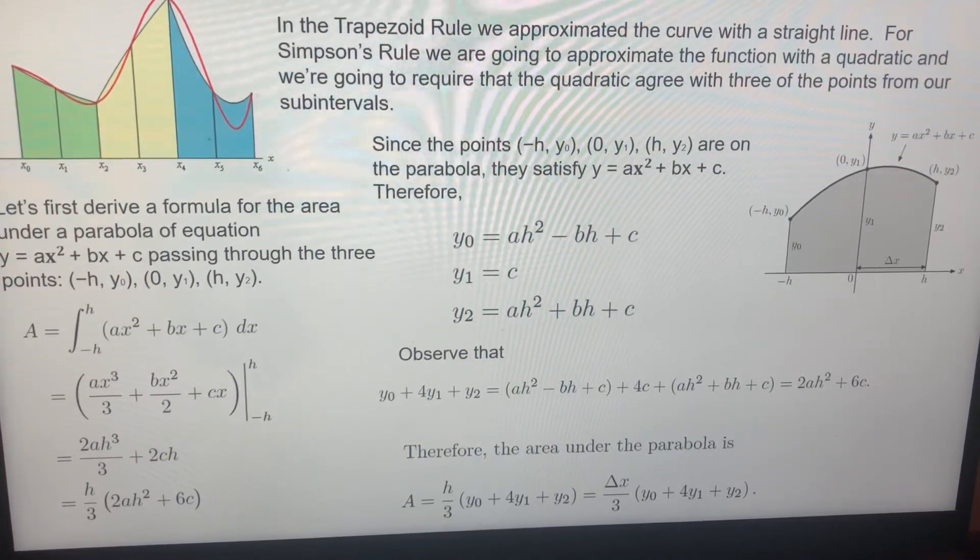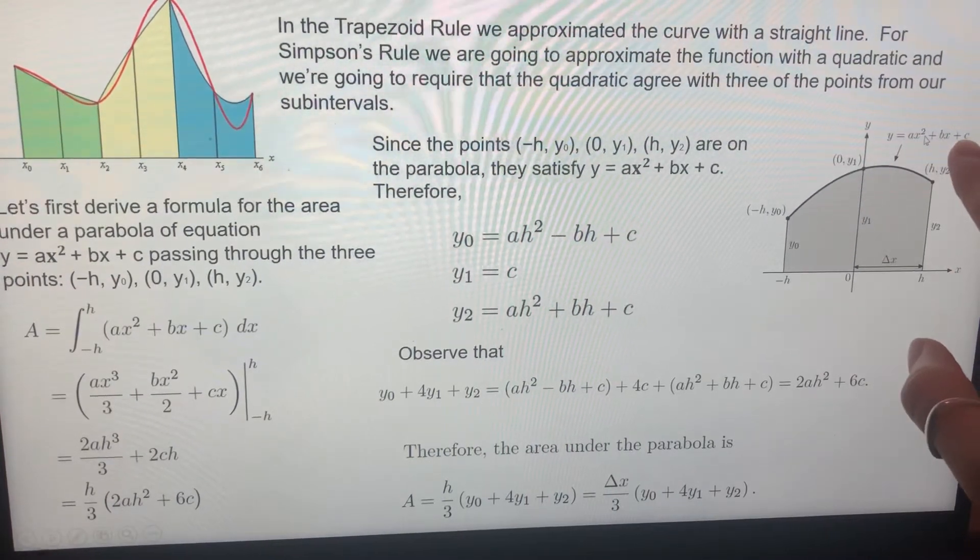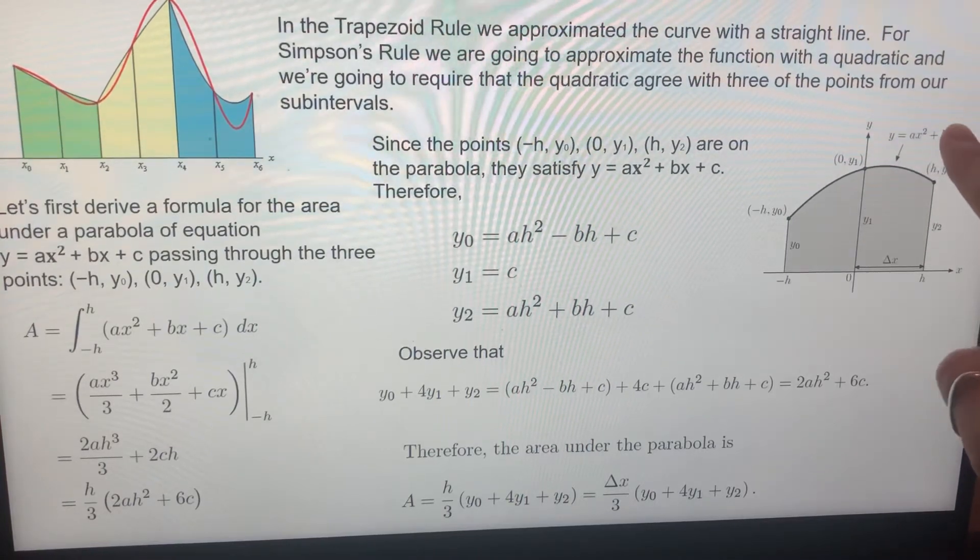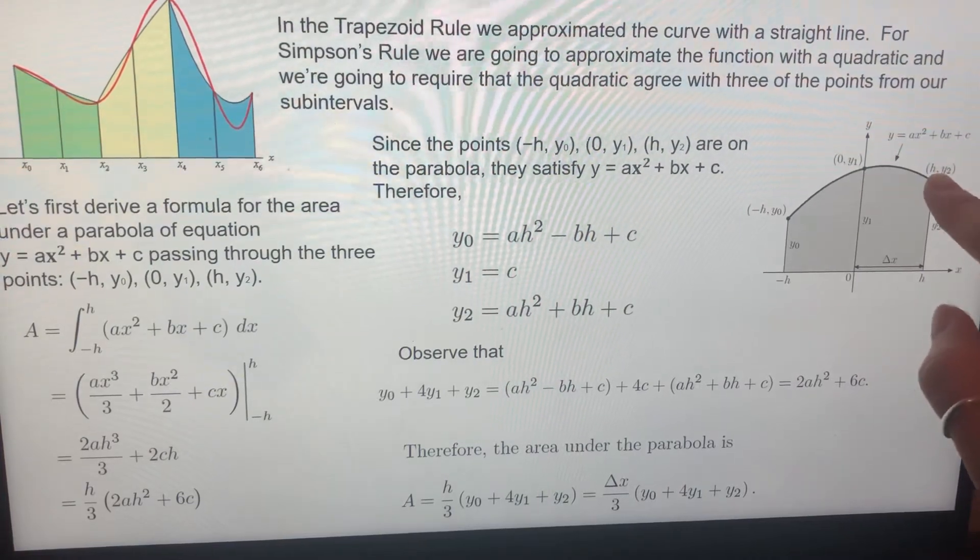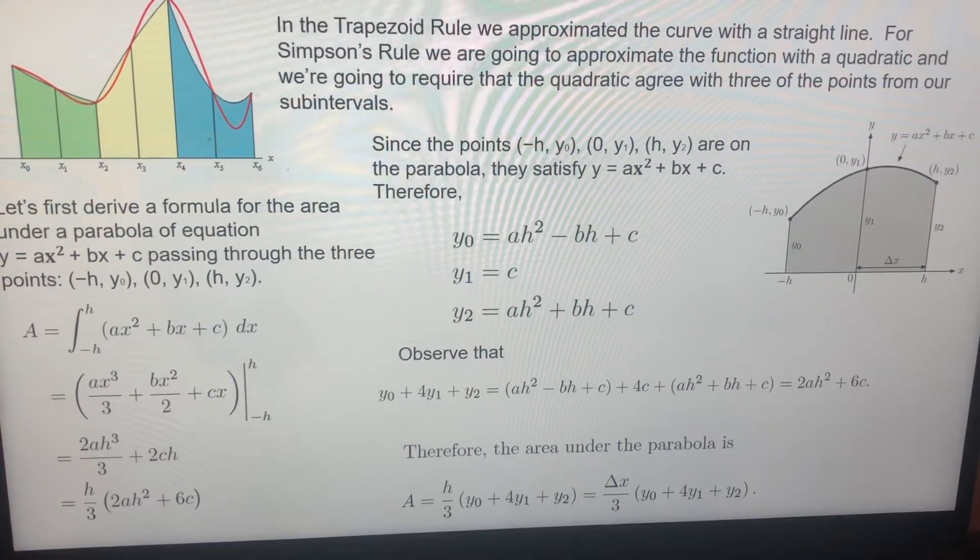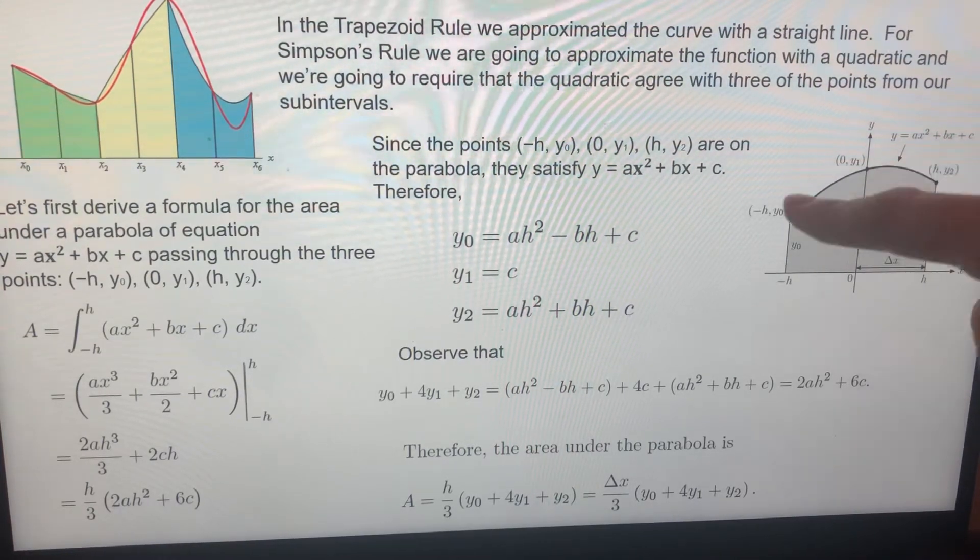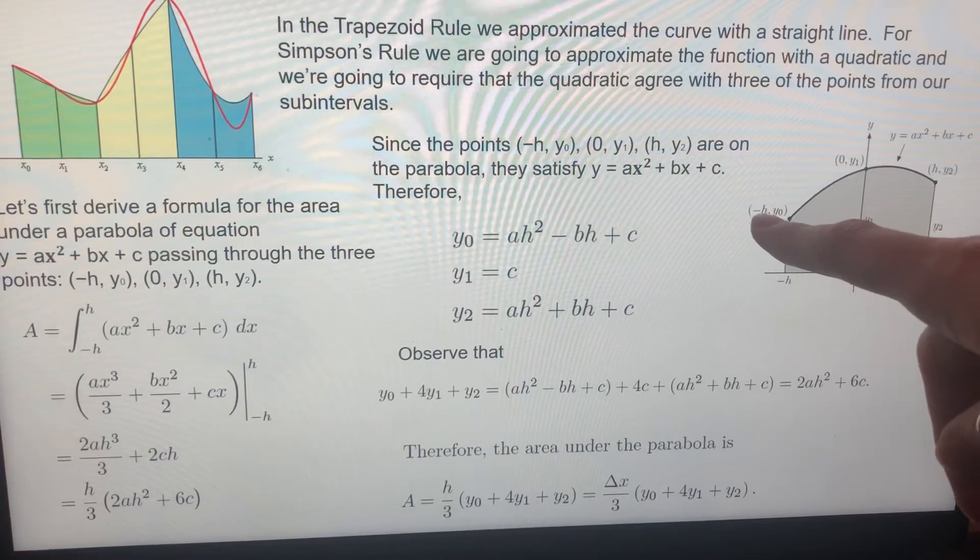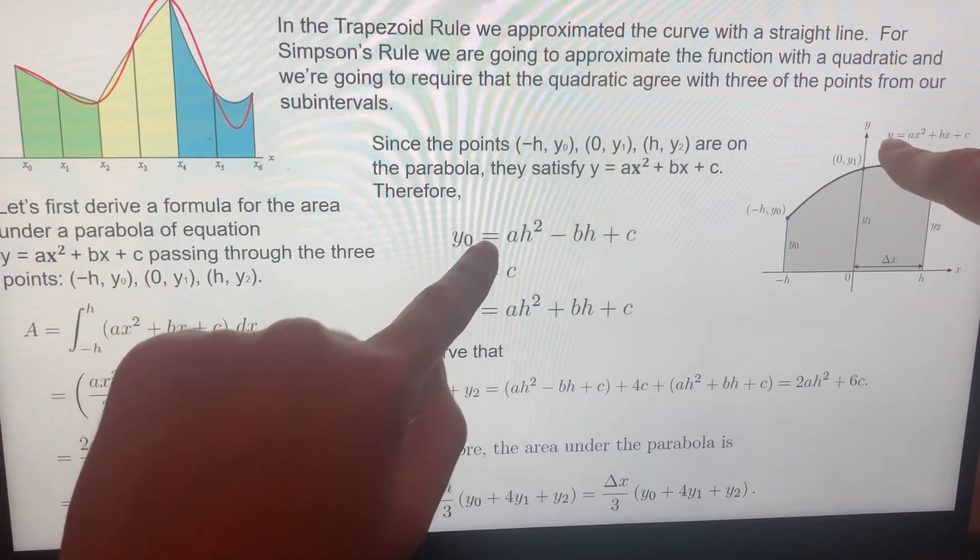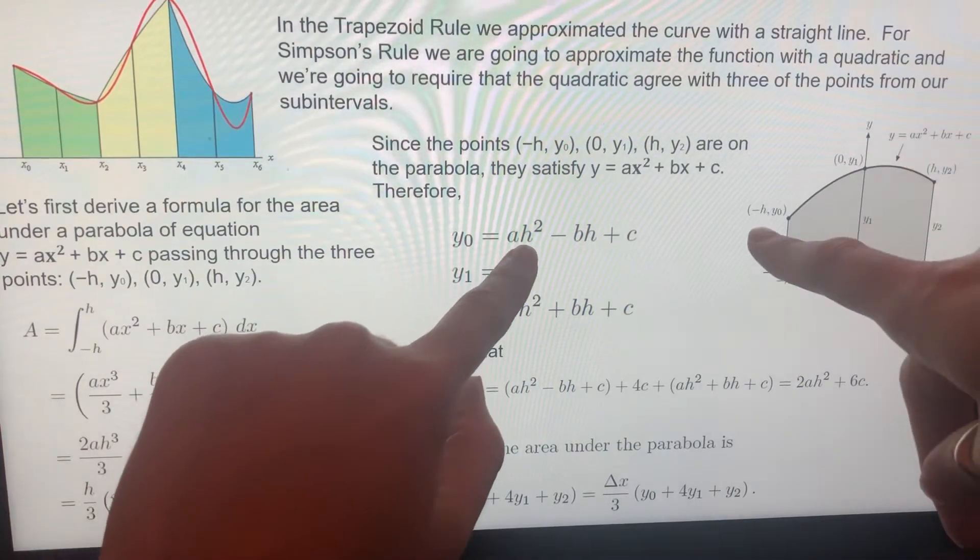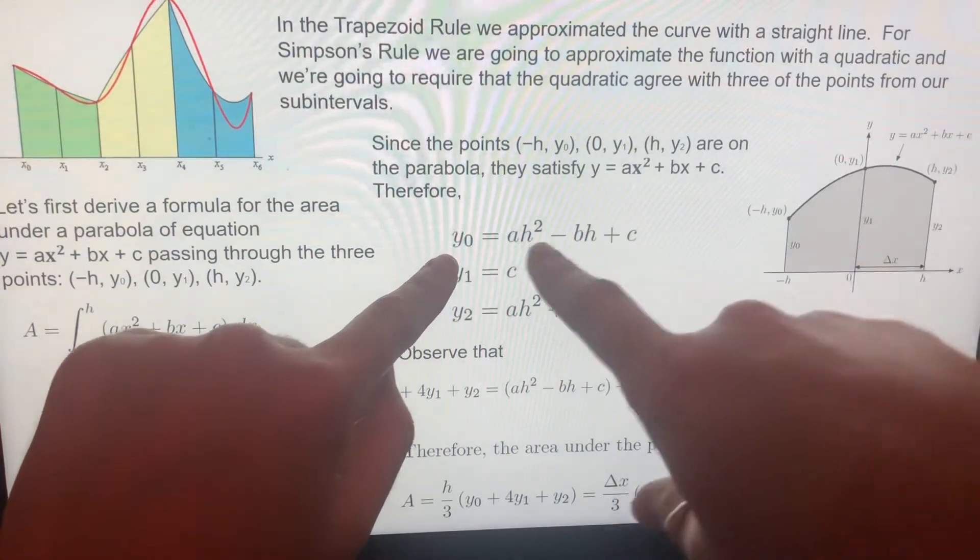So how can we derive it? Let's say that we have a function a x square plus b x plus c. This function is passing through minus h y zero, zero y one, and h y two. If this function is passing through, which means that these points are on this function, when x is minus h, y should be y zero. So this is our function, y is y zero, x is minus h. If I plugged in this point into my function, this is what I'm getting.